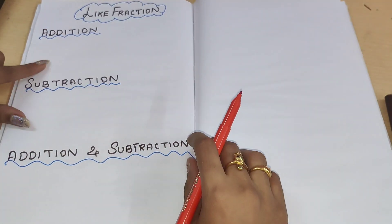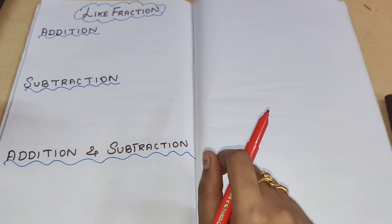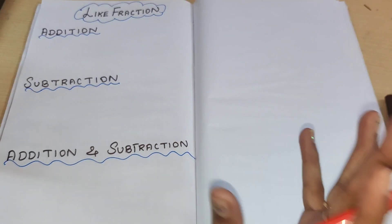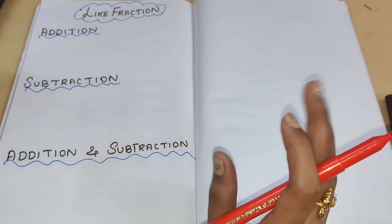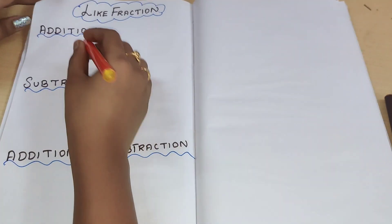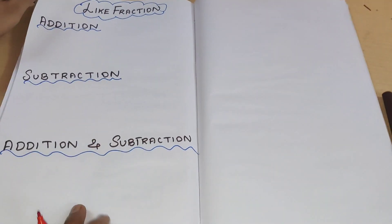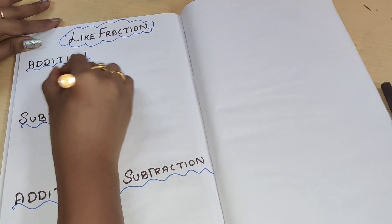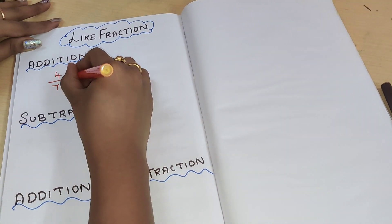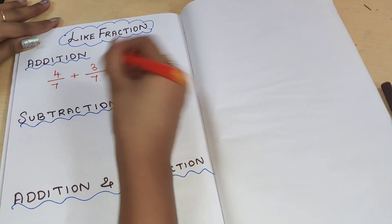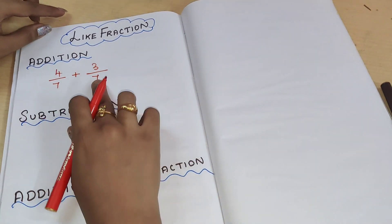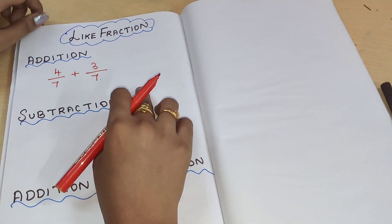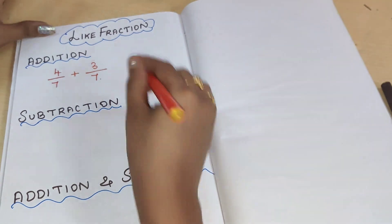What are like fractions? Fractions with the same denominators are called like fractions. So let us apply addition and subtraction operations to like fractions. Take 4 by 7 plus 3 by 7. Both denominators are the same, so it is a like fraction. Let us add both of these like fractions.